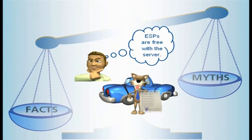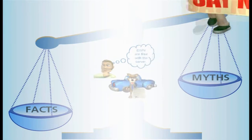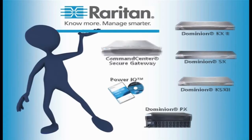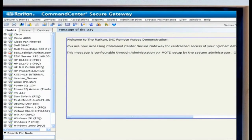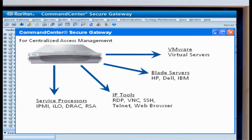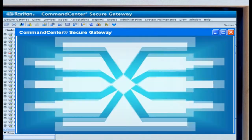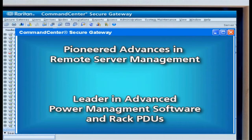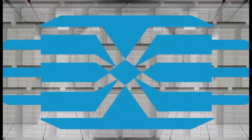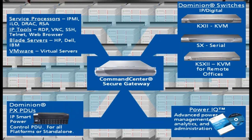The answer to many problems caused by the alleged free embedded service processors is just saying no to ESPs. An alternative is to use Raritan's award-winning solution. Raritan negates complexity by giving you one screen to access all your servers. This single pane of glass lets you launch connections to those servers no matter what access method you're using. We even give you easy and secure access to the ESPs in your data center if you really want to use them as part of your solution. Raritan has pioneered many advances in remote server management and is now the acknowledged leader in advanced power management software and rack power distribution units.